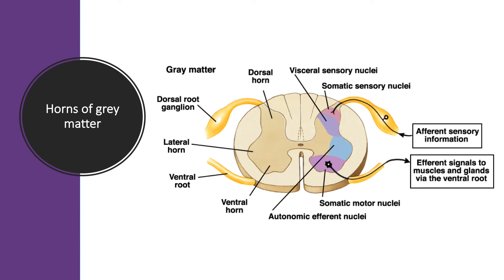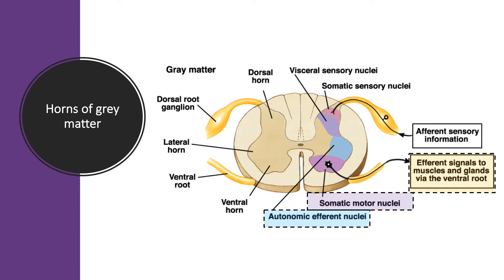We can compare somatic and autonomic nervous systems based on where their lower motor neurons exit the CNS. The dendrites and cell bodies of somatic motor neurons form the gray matter of the ventral horns, and those axons exit to innervate skeletal muscle. The dendrites and cell bodies of autonomic efferent neurons form the gray matter of the lateral horns, and their axons exit to innervate cardiac muscle, smooth muscle, or glands. Both somatic and autonomic axons come together to form the ventral root.